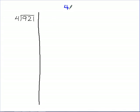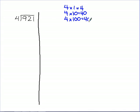The first thing we want to do is make sure that we know what 4 times 1 is. What's 4 times 1, everybody? 4. Of course. What's 4 times 10? 40. And what's 4 times 100? 400. All right, we're going to use that information here.